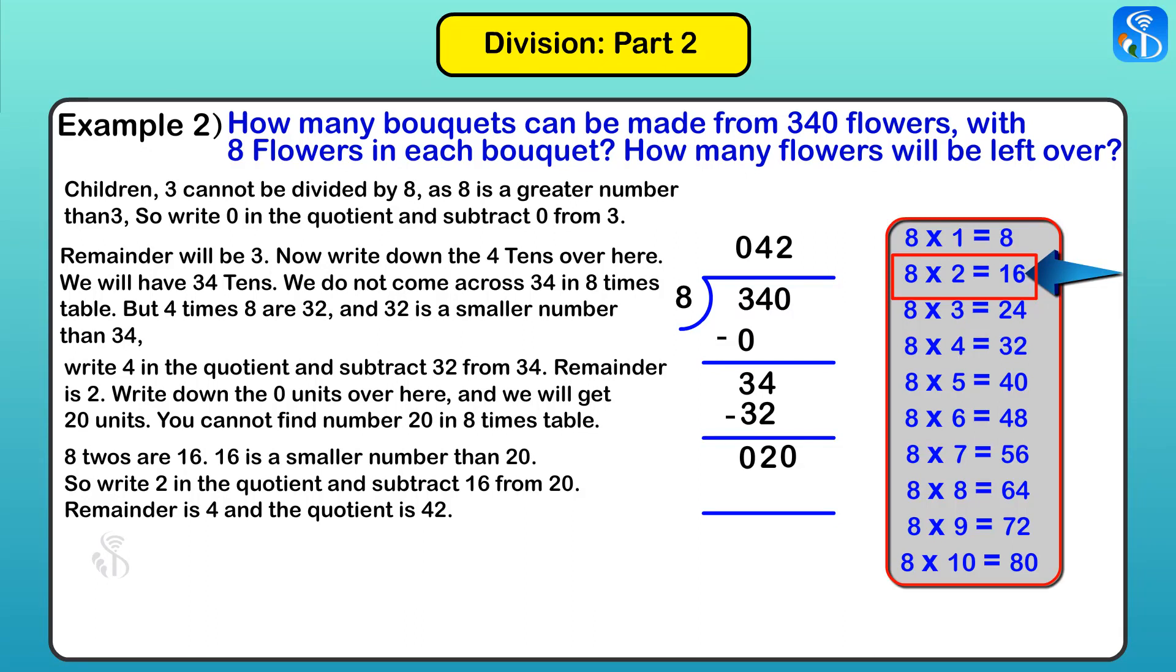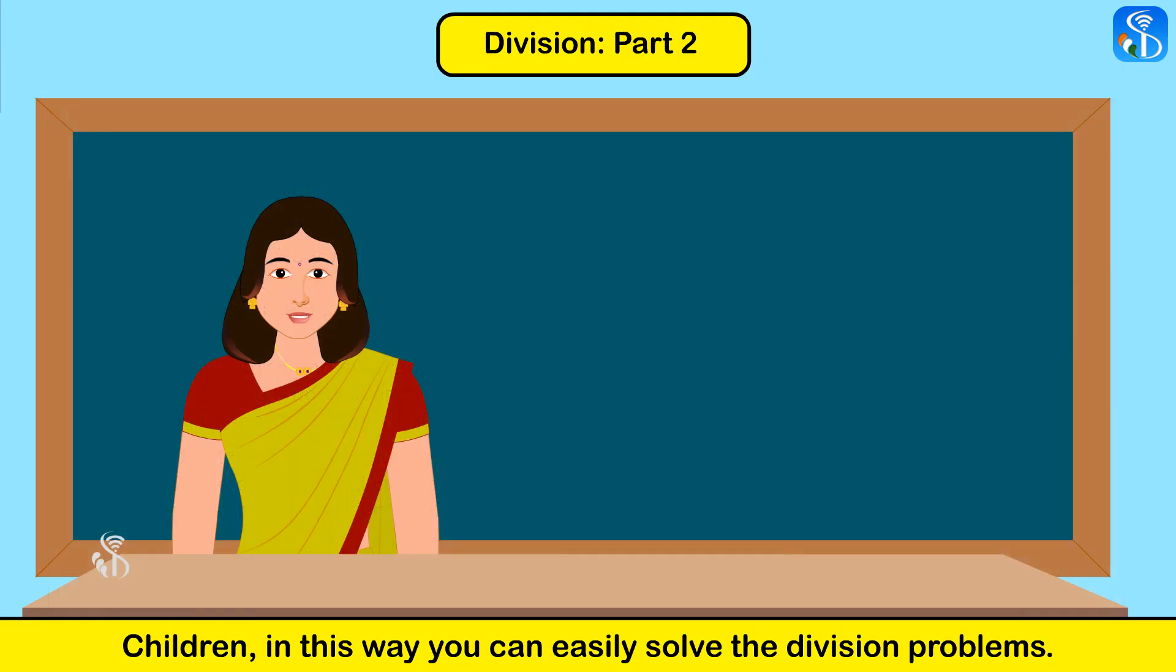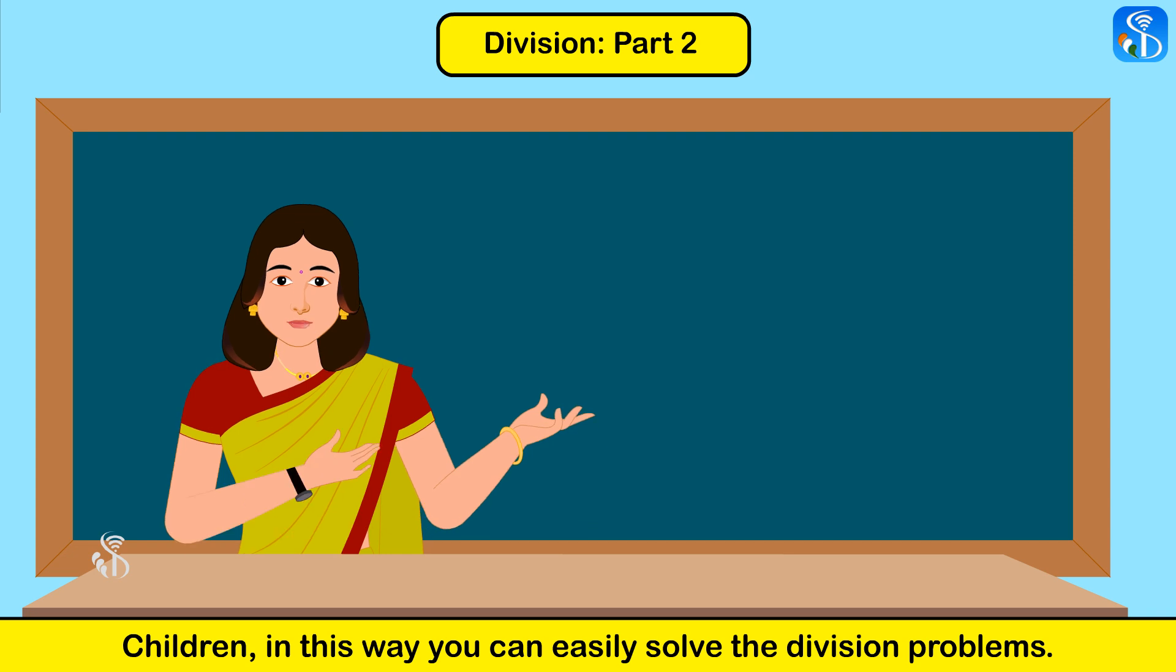20 is not in the 8 times table, but 2×8=16. Write 2 in the quotient. The remainder is 4 and the quotient is 42. Therefore, 42 bouquets can be made from 340 flowers, and 4 flowers will be left over. Children, in this way you can easily solve division problems.